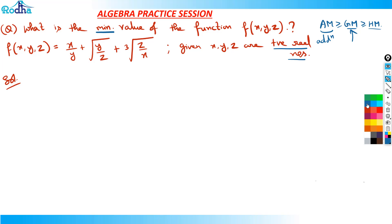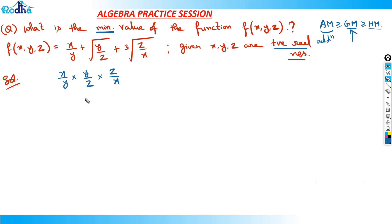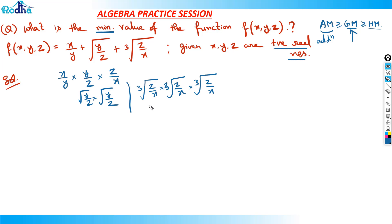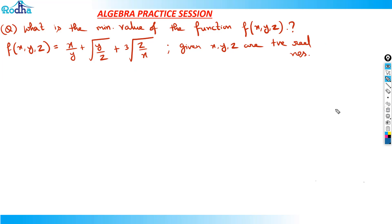In GM, I want all these terms to cancel. The terms cancel when we have x/y · y/z · z/x. For √(y/z) to become y/z, I need to multiply √(y/z) by itself two times — that removes the square root and gives y/z. Similarly, for ∛(z/x) to become z/x, I need to multiply it three times. Because a^(1/3) · a^(1/3) · a^(1/3) = a — that's the basic rule.